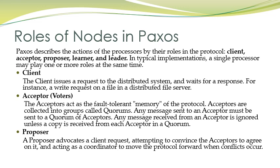The third type of node in Paxos is the proposer. A proposer advocates a client request, attempting to convince the acceptors to agree on the value proposed by the client. The proposer will try to propose some value, and all nodes must agree on that value. This proposer also acts as a coordinator to move the protocol forward when conflicts occur.